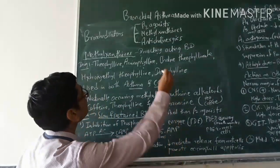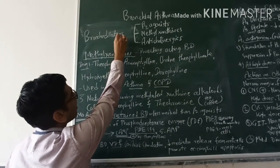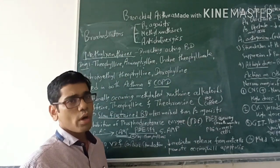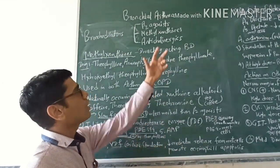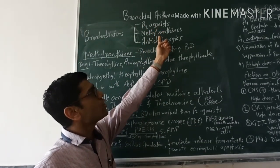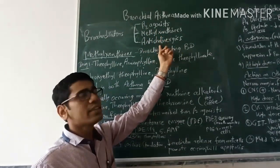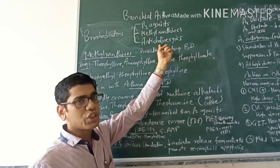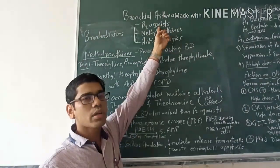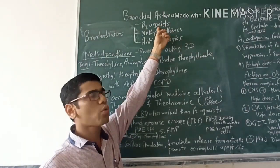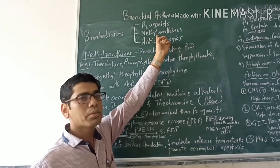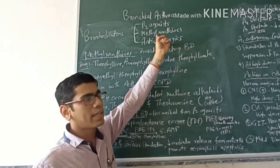So guys, we have started with the bronchial asthma and we have seen the bronchodilators. There are three types of bronchodilators: beta-2 agonists, methylxanthines, and anticholinergics. In the previous lecture I covered the beta-2 agonists. In today's lecture I am going to cover methylxanthines.